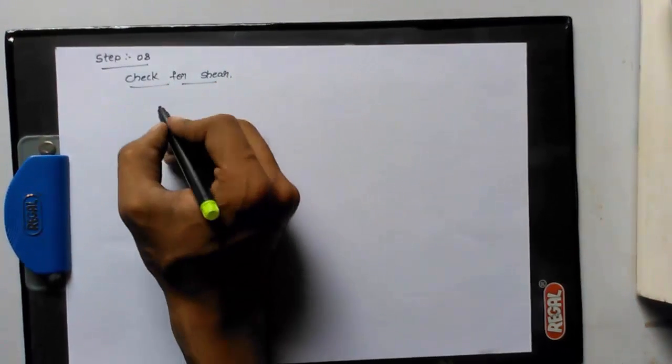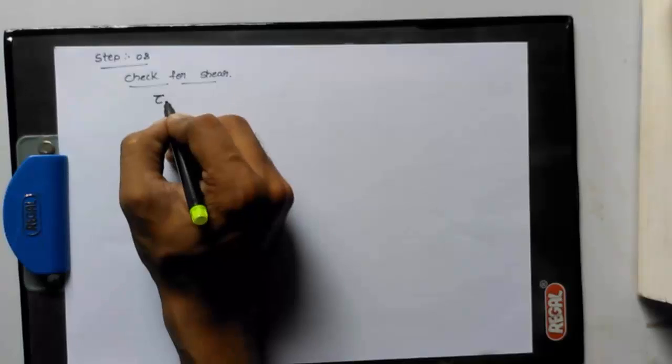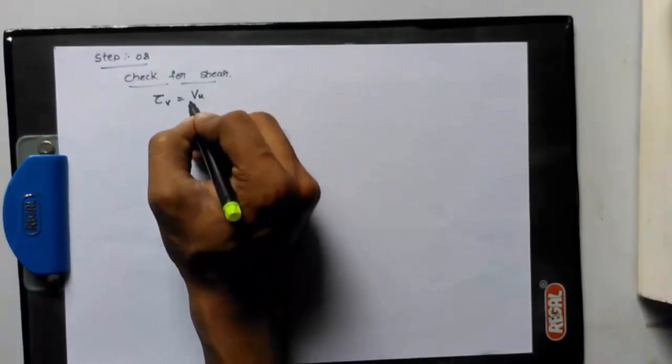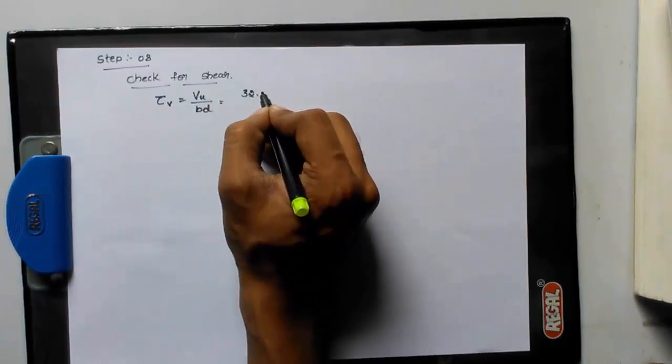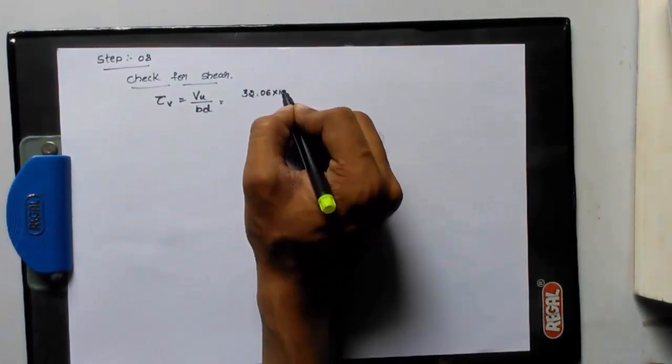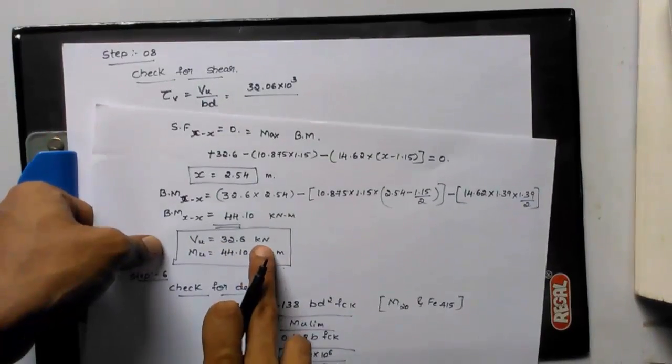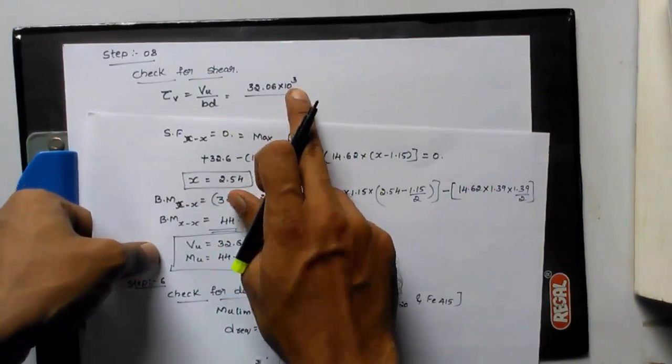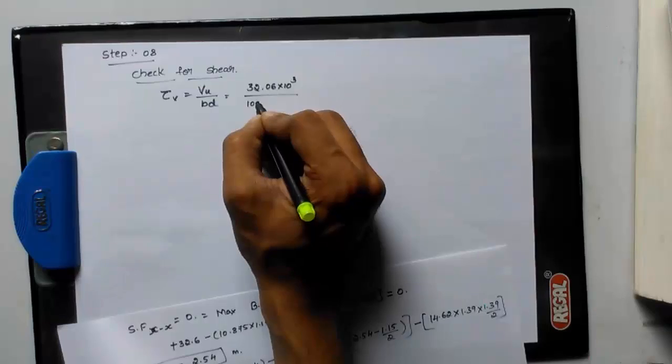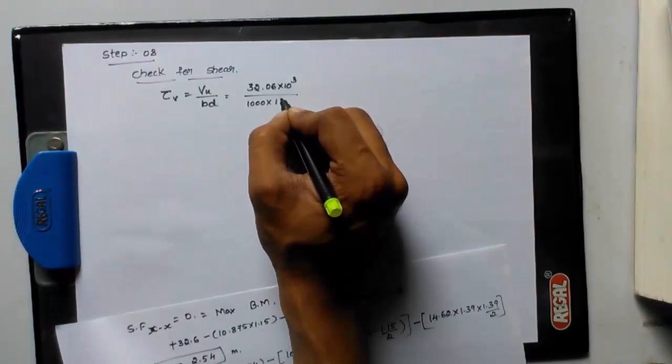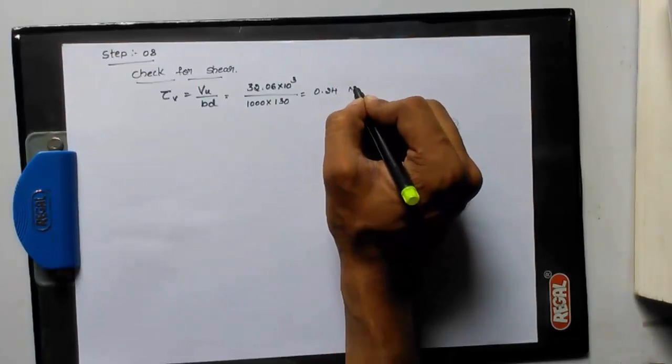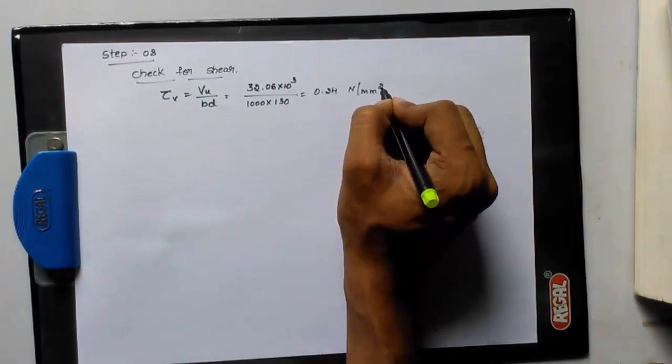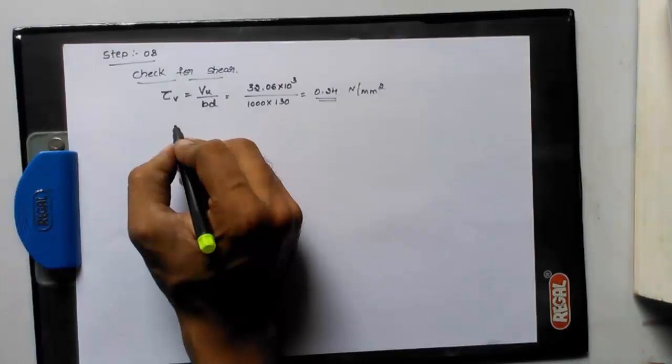Check tau v and tau c. For first one, tau v, we have formula from code book: Vu by bd. Vu is maximum shear force, we have got 32.6 into 10 power 3. So Vu is 32.6 kilo newton. Kilo is nothing but 10 power 3, and b is 1000 into d is 130. We will get 0.24 newton per mm square.